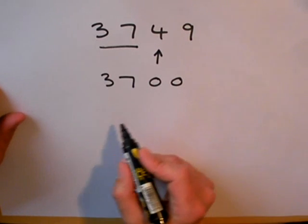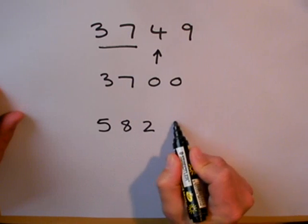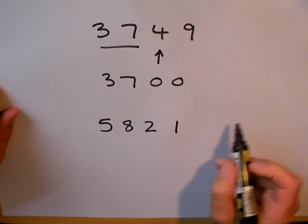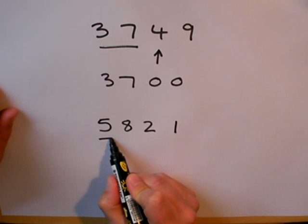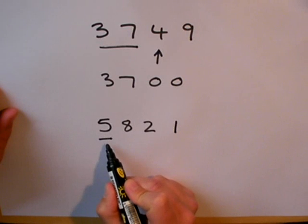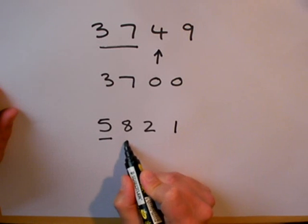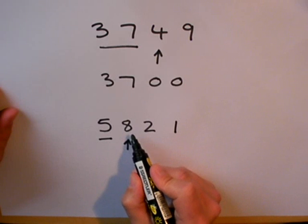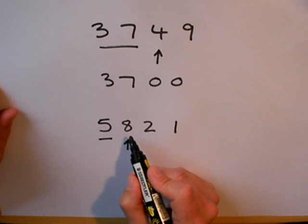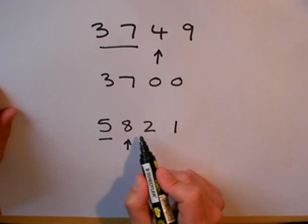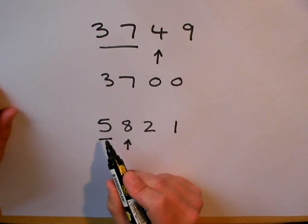Here's another example. This time I'm going to round it to one significant figure. Again I count from the front. I look at the next digit and decide that it's larger than five so I'm going to round up. It's not 5821, it's going to be 6000.